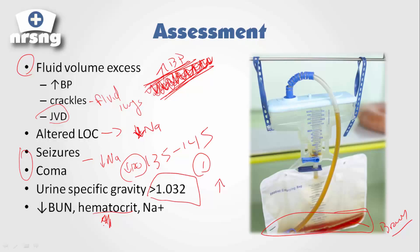Just think of dilution — when we dilute anything, all the numbers for these solutes are going to go down as the amount of water goes up. The opposite is going to be the case with our urine: urine becomes much more concentrated because all that fluid is staying in our body.